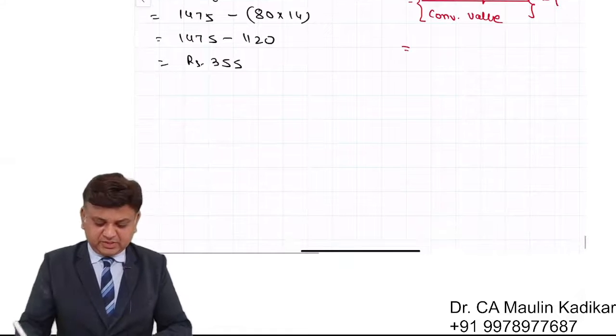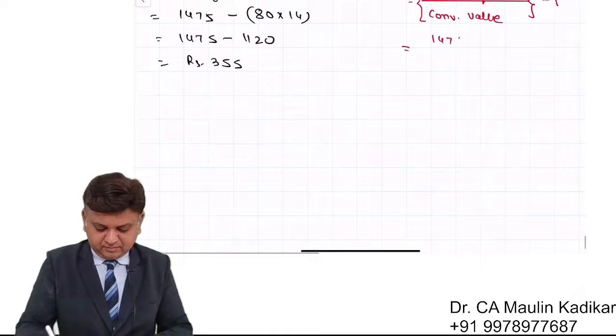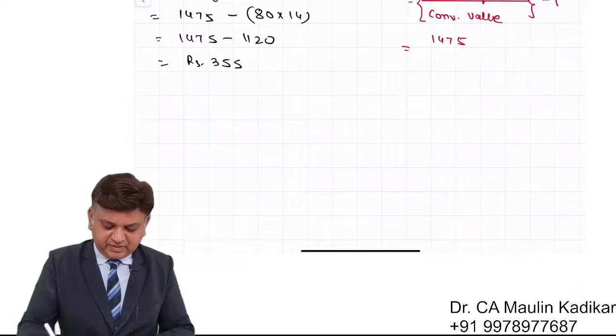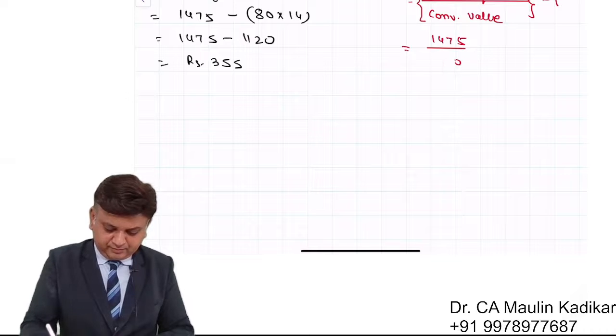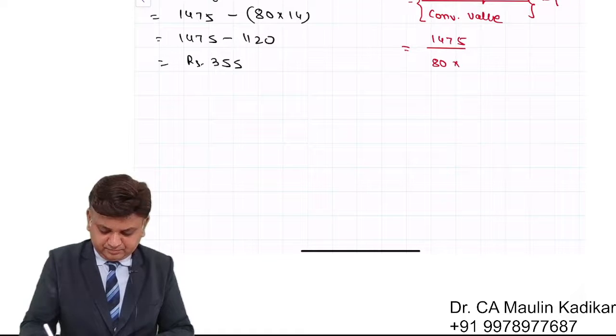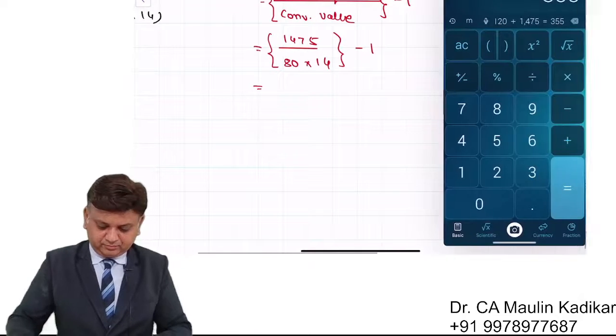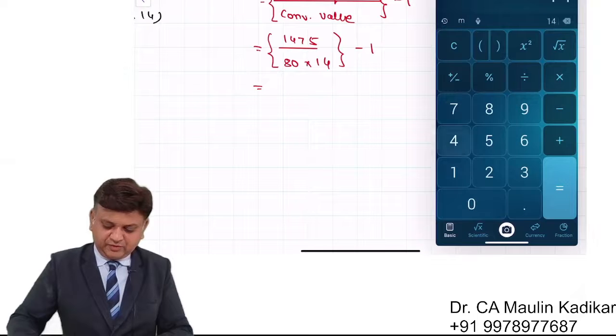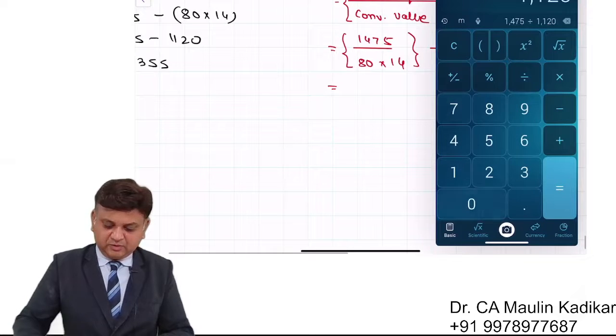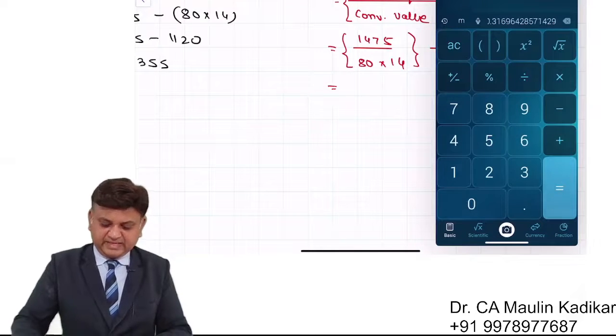Market price of bond is 1475 divided by conversion value 1120, which we have calculated on left hand side, 80 into 14. Which we can write, the answer will be 1 deducted, so 1475 upon 1120 minus 1.